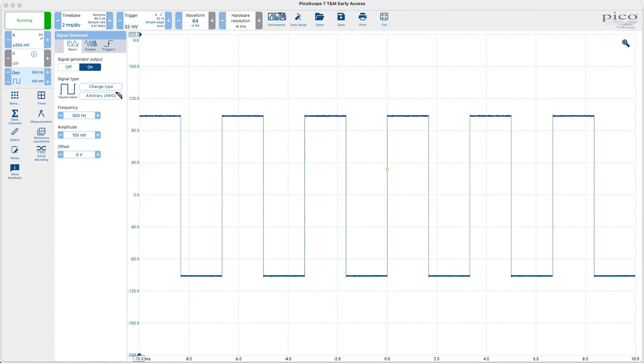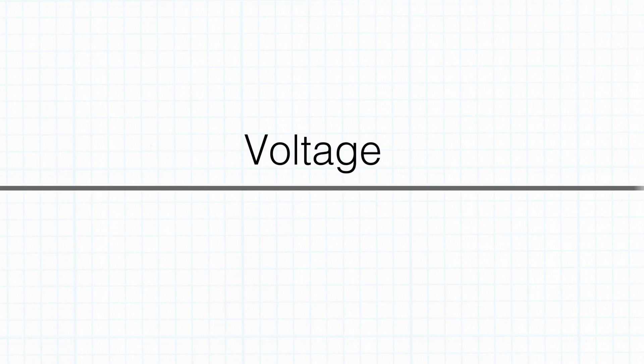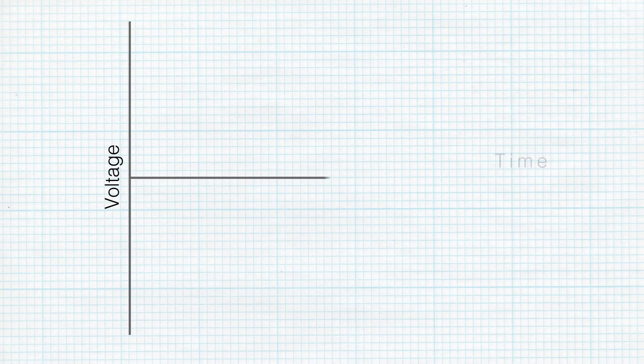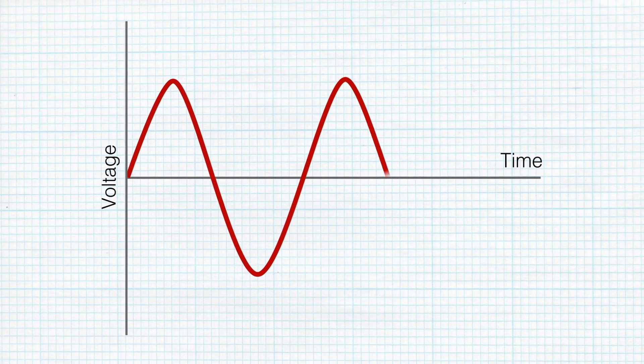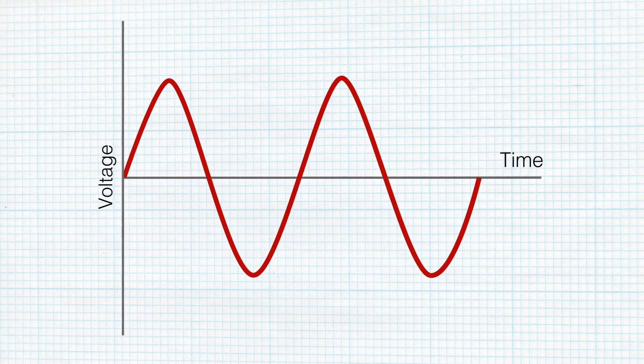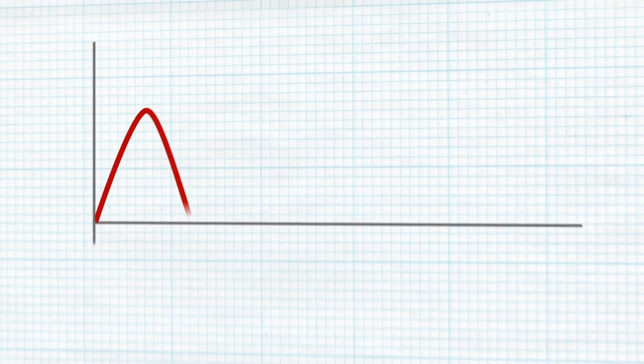The most common way of looking at waveforms is on an oscilloscope where we see a plot of amplitude, normally voltage, on the vertical axis against time on the horizontal axis.